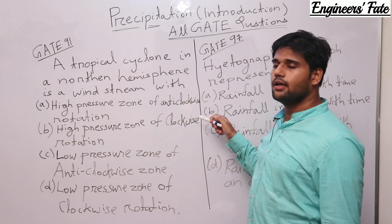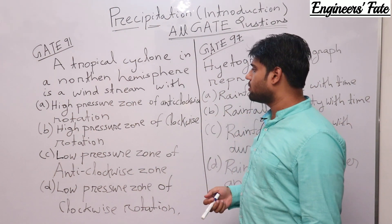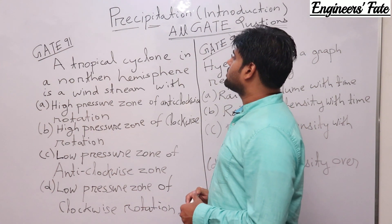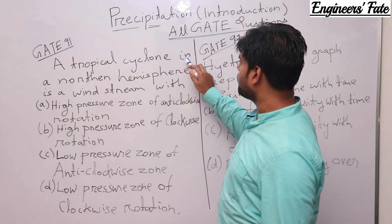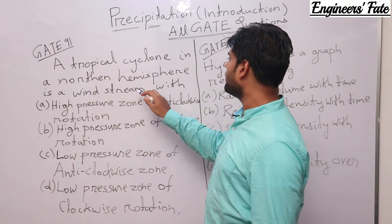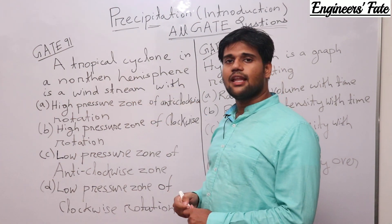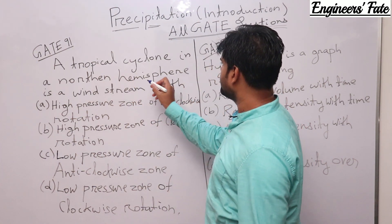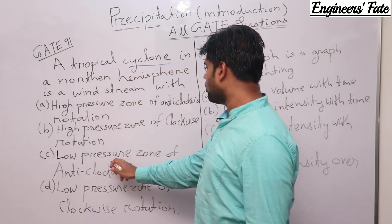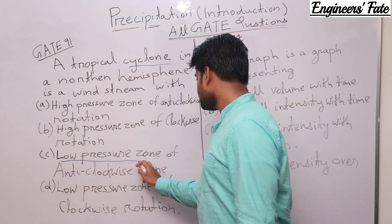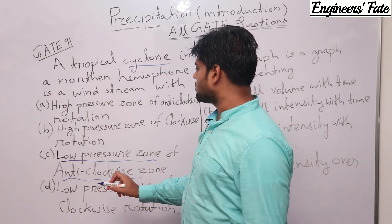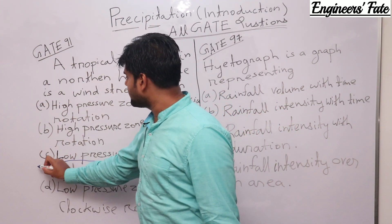Today's question was asked in GATE 1991. The question is: a tropical cyclone in the northern hemisphere is a wind stream — what is its direction? As I described last time, a cyclone generally occurs in a low pressure zone and the direction is anti-clockwise. So the answer is C.